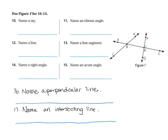The first question says name a Ray. A ray has an arrow going one direction only. So if we look at our figure, we could say that BK is a ray because it starts at B and ends with K. I could also say BA, RP, RC, or RQ are rays. I couldn't say BR is a ray because those ends have segments. So I only can use the ones that have an endpoint at one end and an arrow at the other.